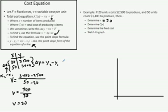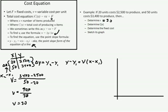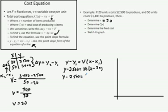The point-slope formula is: Y minus Y1 equals the slope times (X minus X1). Here the slope is the variable cost. Our first point is X equals 20 and Y equals 2,500, so we substitute: Y minus 2,500 equals 30 times (X minus 20). Distributing the 30 gives us 30X minus 600. Then we add 2,500 to both sides.